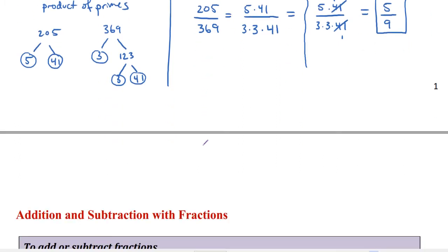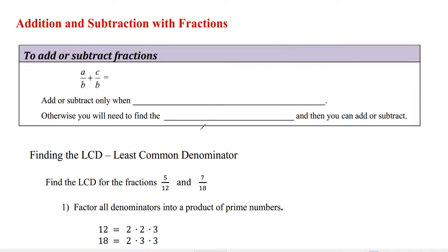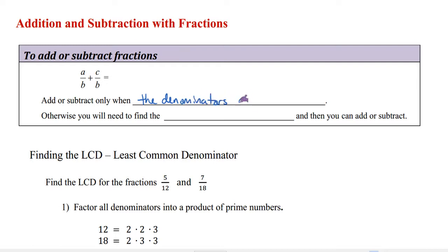Now let's talk about adding and subtracting fractions carefully. For a fraction a over b plus c over b, where both denominators are the same, it is simple: you can only add or subtract when the denominators are the same. In that case, you just add the numerators — a plus c — and keep the denominator the same.